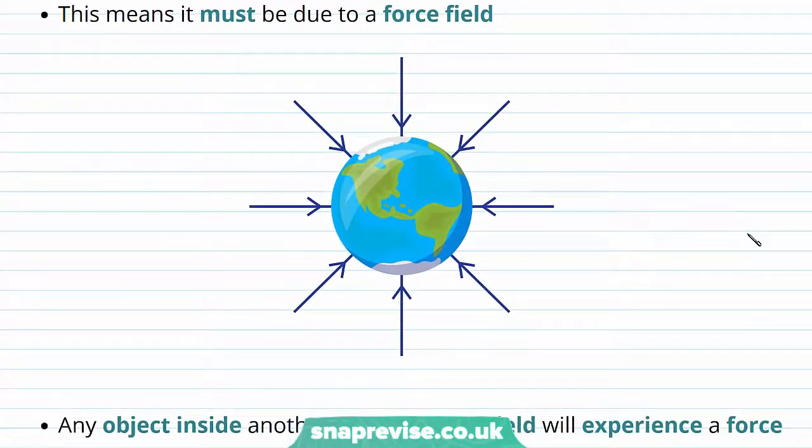This means that the gravitational force must be due to a force field. And we've drawn some lines of this force field in the diagram here.